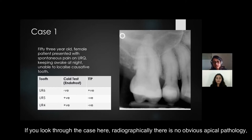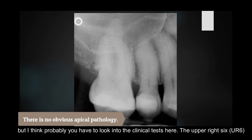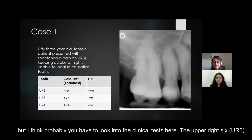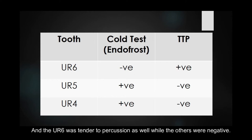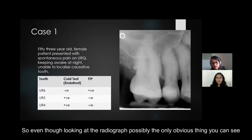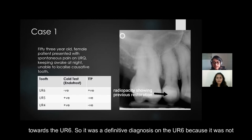Looking through the case, radiographically there is no obvious apical pathology. However, looking at the clinical tests, the upper right 6 was negative to the thermal test while the upper right 5 and 4 were positive. Upper right 6 was also tender to percussion while the others were negative. So even though the only obvious radiographic finding is possibly distal caries on the upper right 5, the clinical tests pointed towards the upper right 6.